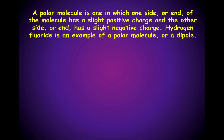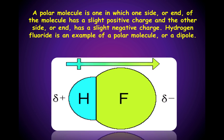A polar molecule is one in which one side or end of the molecule has a slight positive charge and the other side or end has a slight negative charge. Consider the model of hydrogen fluoride. Hydrogen fluoride is an example of a polar molecule or a dipole. The word dipole means polar molecule. Notice that there is a partial positive charge on the hydrogen atom and a partial negative charge on the fluorine atom. That is because fluorine is more electronegative than hydrogen.